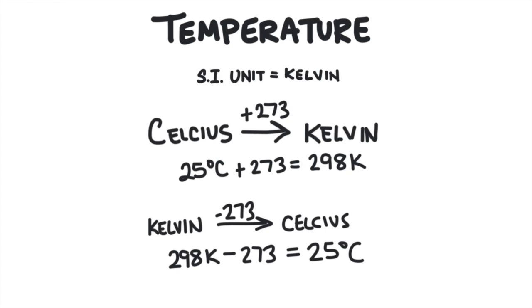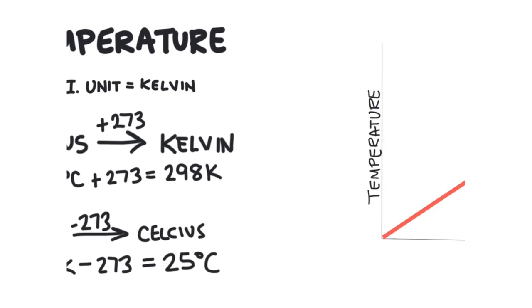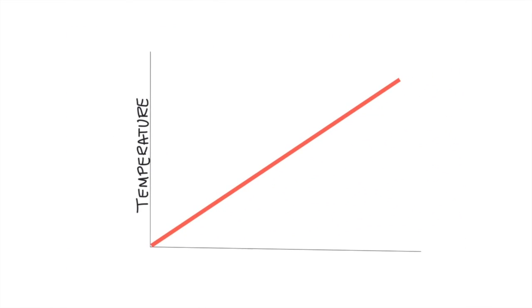Now, you're probably wondering, why use Kelvin if we always measure in Celsius? Well, Kelvin is the only temperature unit that does not go into the negatives. When you hit 0 Kelvin, you can't get any colder than that. It's called absolute zero.